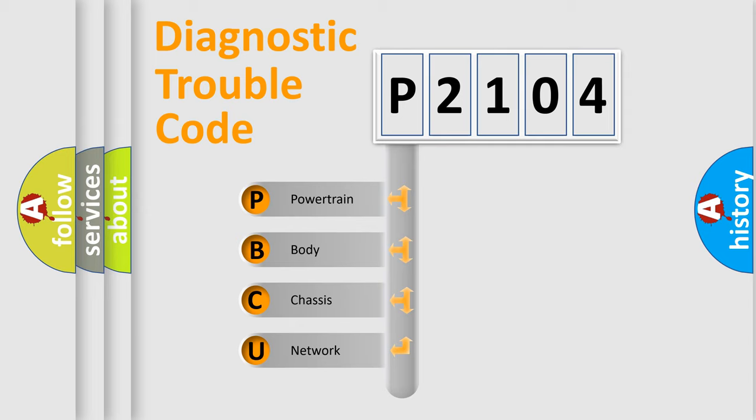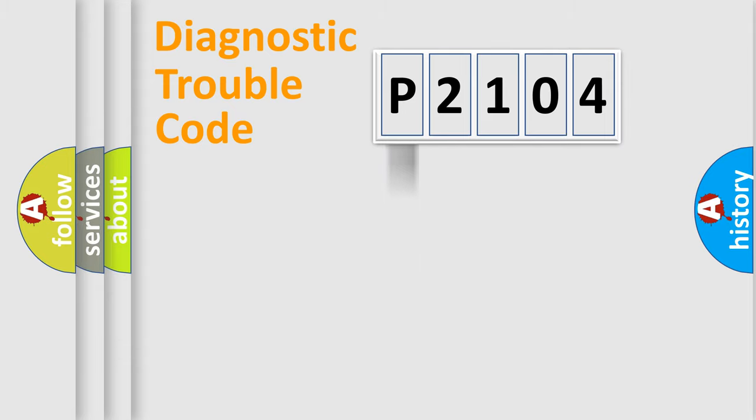We divide the electric system of automobiles into four basic units: powertrain, body, chassis, and network. This distribution is defined in the first character code.